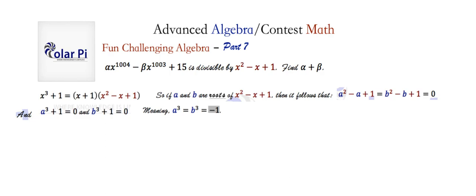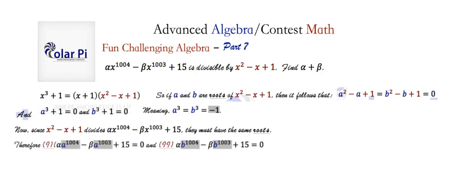Now, since this quadratic divides this 1004-degree polynomial, it must mean that the roots of the quadratic are also roots of this 1004-degree polynomial in x. That's to say, since this quadratic divides this here, their roots must be shared. They must have common roots, two common roots to be specific. So if a and b are the roots of the quadratic, then a and b are roots of this 1004-degree polynomial.